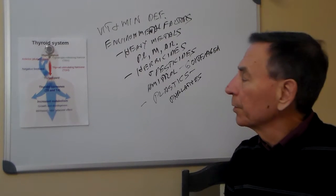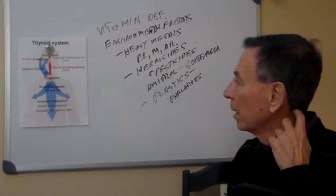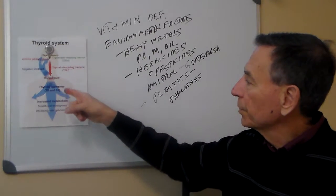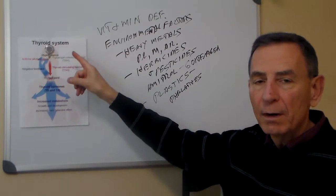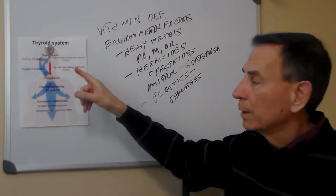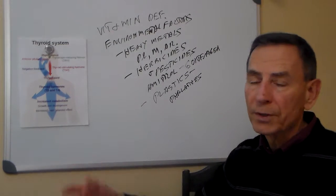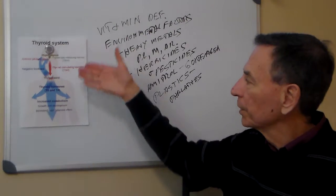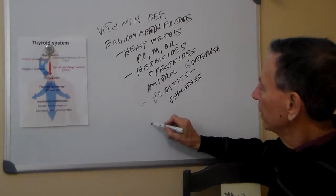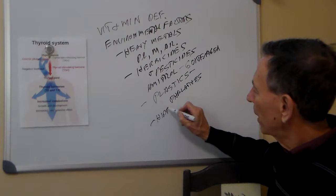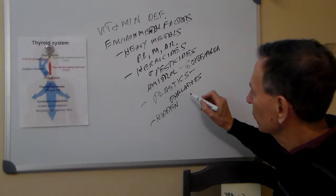Some other things to consider include the function of the other glands that control the thyroid. So the pituitary and the hypothalamus, if those aren't working properly, the thyroid's not going to work properly because they're helping to control it. Another area of problems can be hidden viral or bacterial infections.